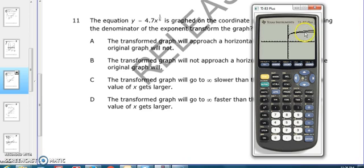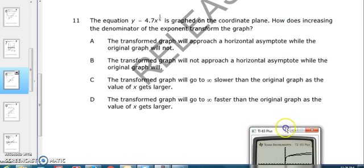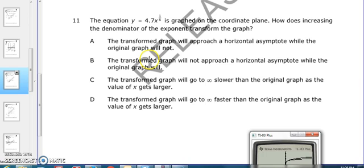And as you can see, the new one also approaches a horizontal asymptote, a little less than the first one. And so, if you look at the answers,